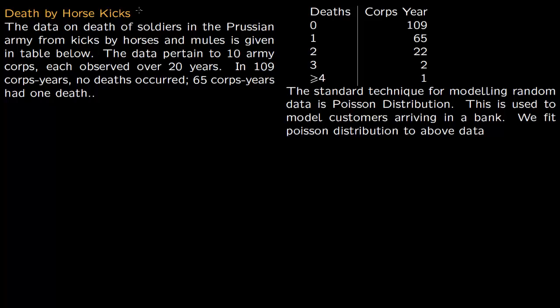A very famous example of fitting a Poisson distribution is death by horse kicks. This example shows the unreasonable effectiveness of mathematics to model random data. This data is on the death of soldiers in the Prussian army from kicks by horses and mules.